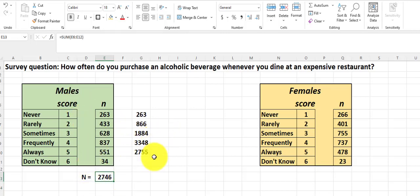So that's how many males we had. I'm going to do the same thing for females. So we have the female N and the male Ns, and we have their total scores.